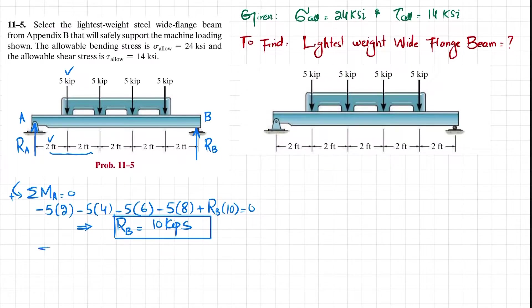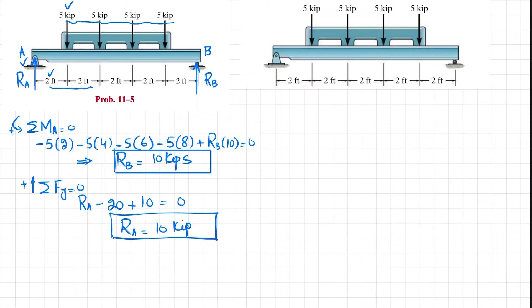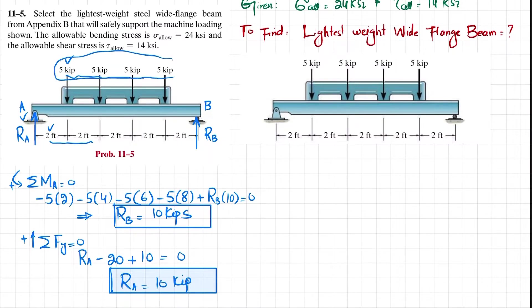Similarly, using the second equilibrium condition — sum of all forces in the Y direction equals zero, taking upward as positive — we have RA + RB − 20 = 0. Since RB = 10, RA = 10 kips. This also makes sense by symmetry: the total load is 20 kips and the beam is symmetric about its midpoint, so each reaction is 10 kips.